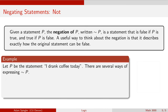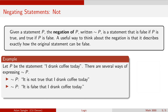Let P be the statement 'I drank coffee today.' There are several ways we could express the negation of this statement. We could say 'It is not true that I drank coffee today,' or 'It is false that I drank coffee today.' Most clearly, we could state it as 'I did not drink coffee today.' So if the original statement was 'I drank coffee today,' then the negation is 'I did not drink coffee today.'